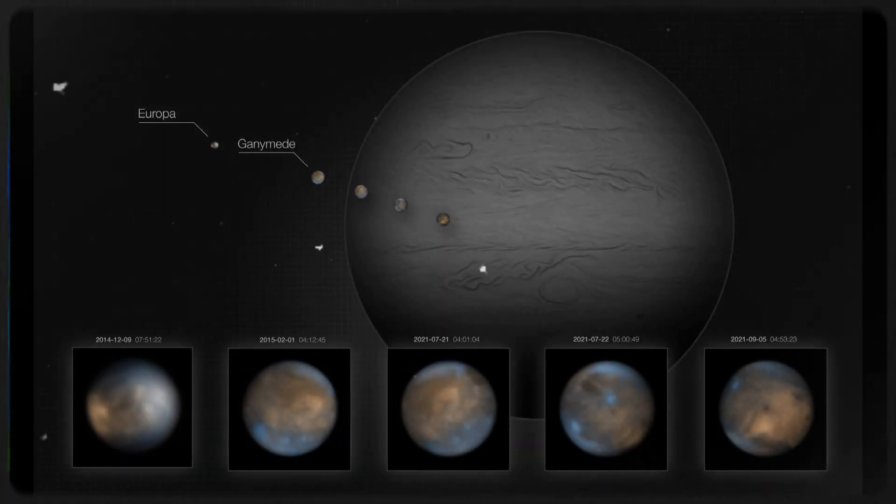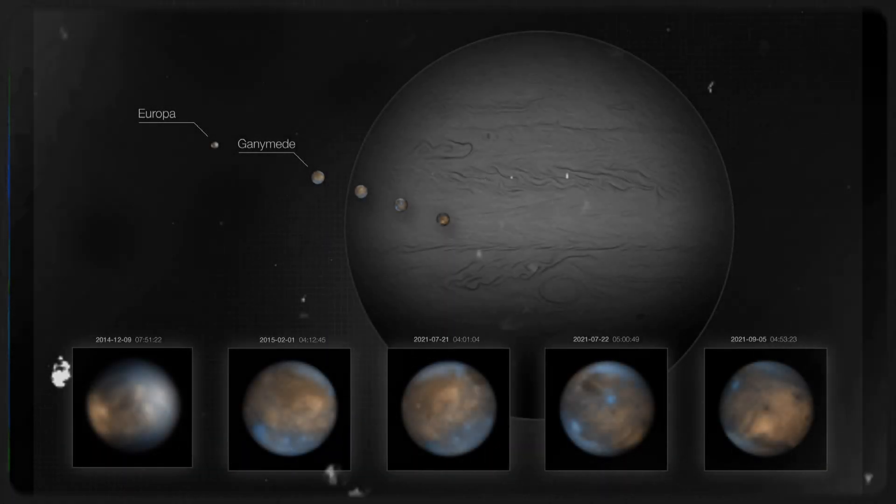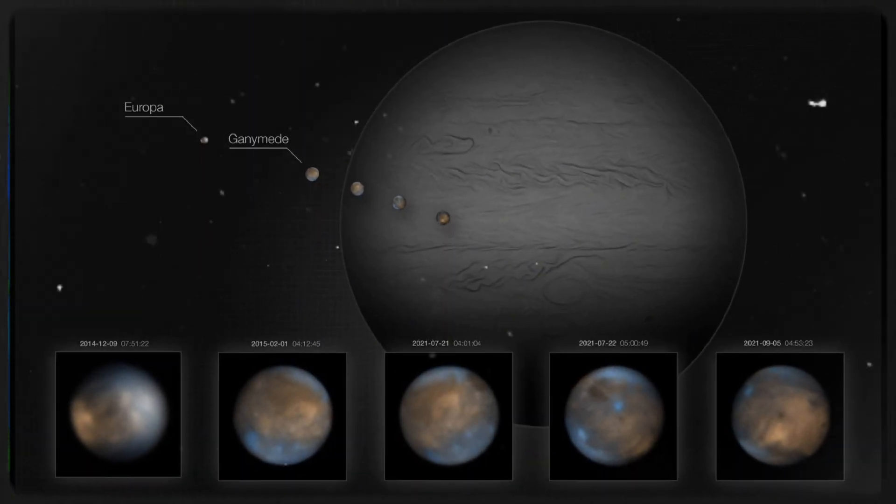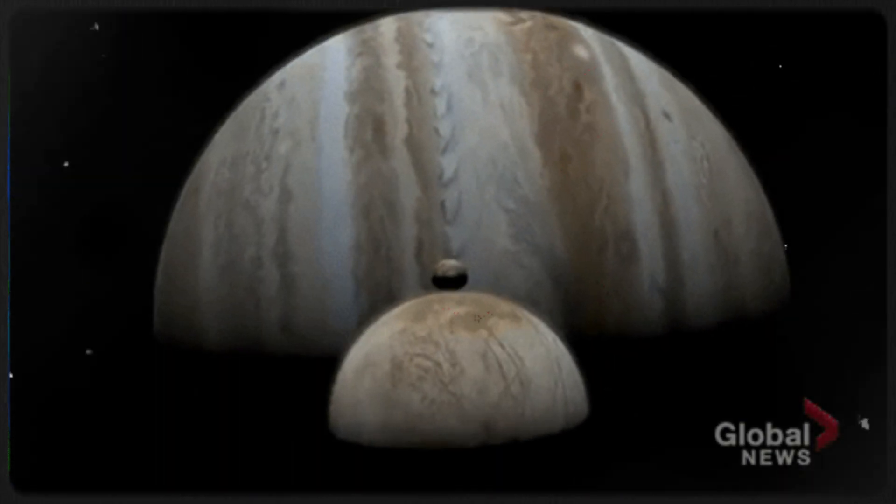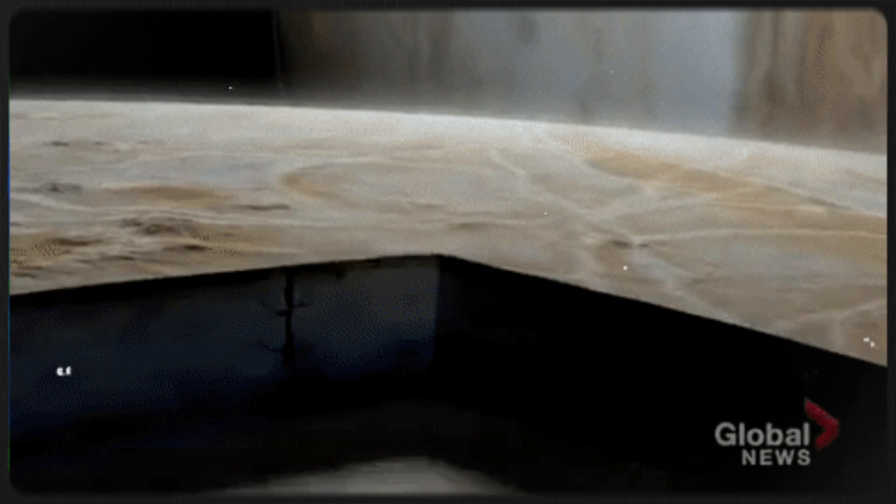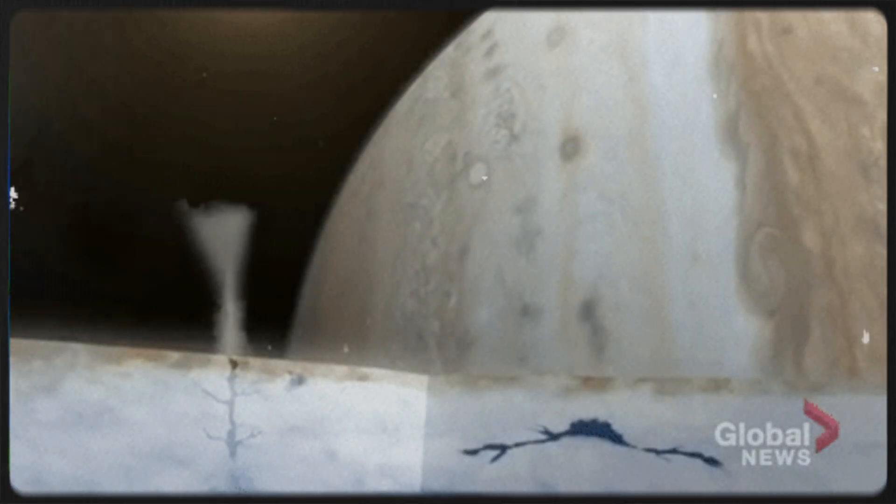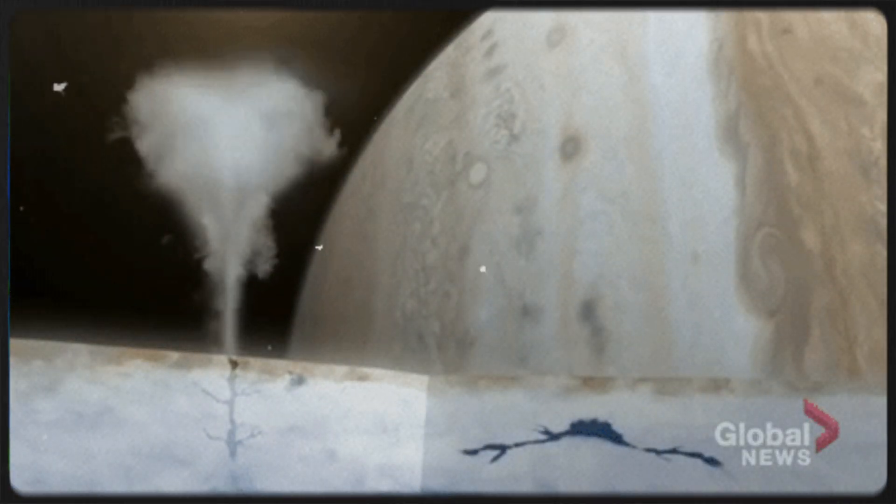The Voyager spacecraft captured over 33,000 images of Jupiter and its moons, each one revealing new and unexpected details. Among the discoveries were Jupiter's rings and Europa's icy surface, which appeared cracked and is now believed to be over 60 miles thick.